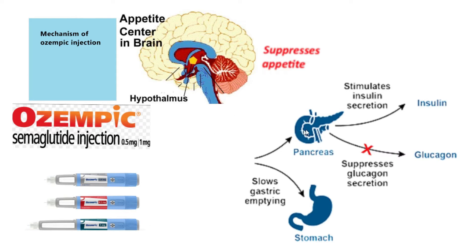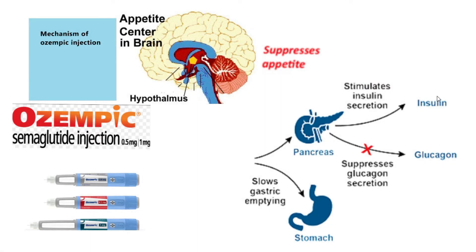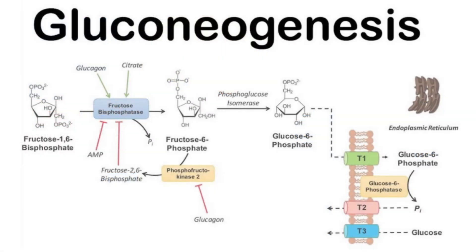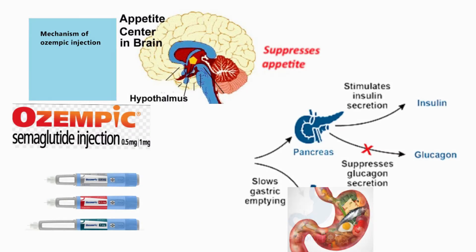Secondly, it increases insulin production, which decreases the blood sugar level in the body. It also suppresses glucagon secretion, so more glucose is not produced in the body through gluconeogenesis.